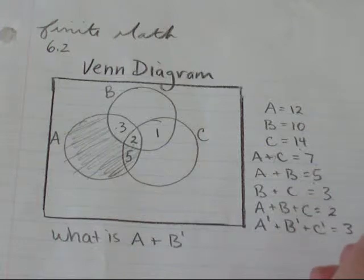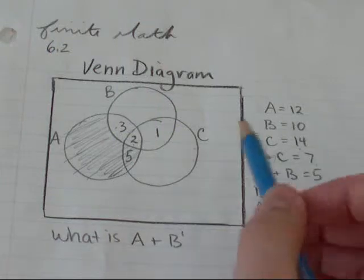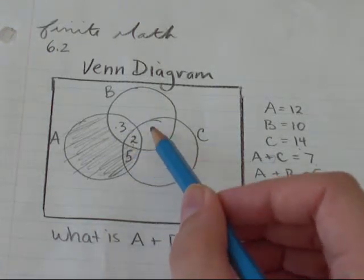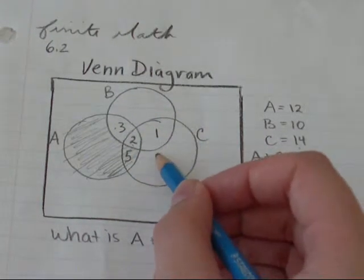So the things that are only C, not C and B, not C and A, and not A, B and C, are 14 minus 5 minus 2 minus 1, and that just gives me 6.